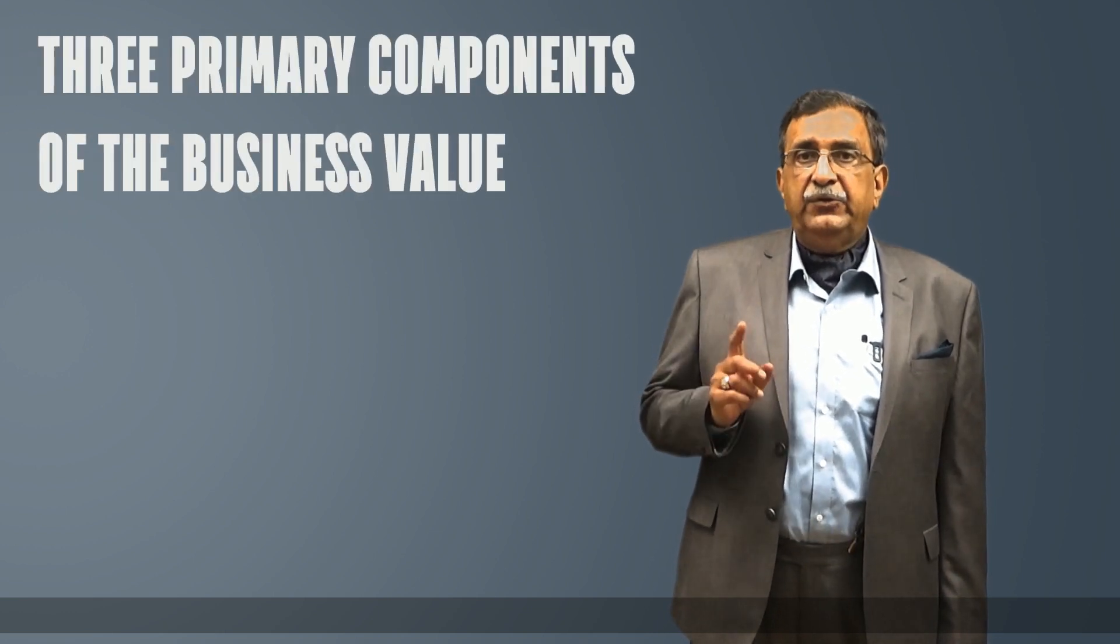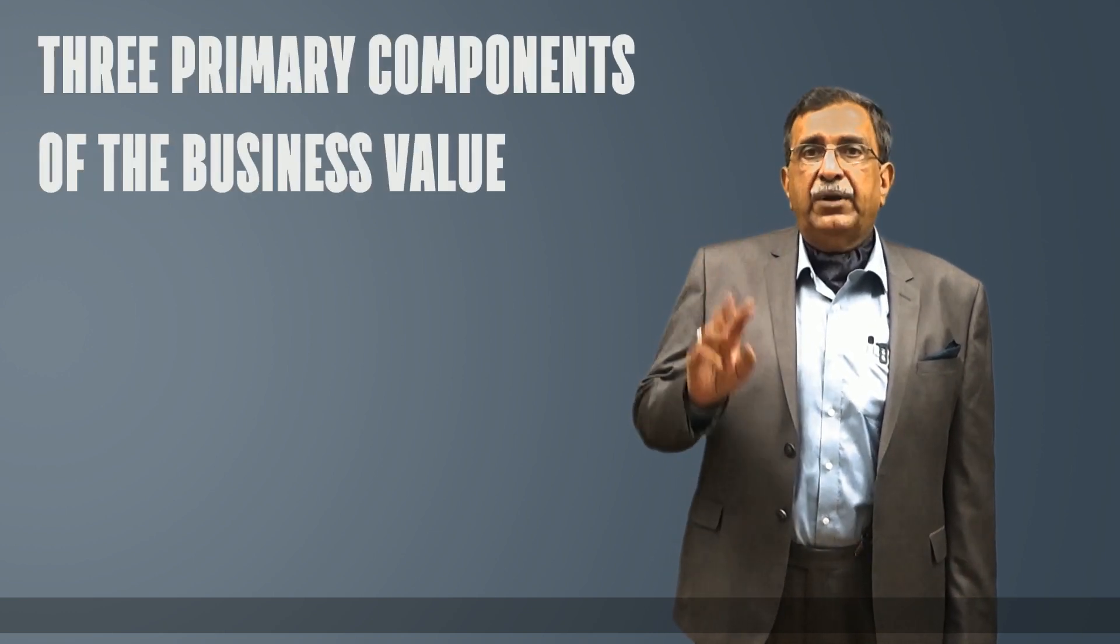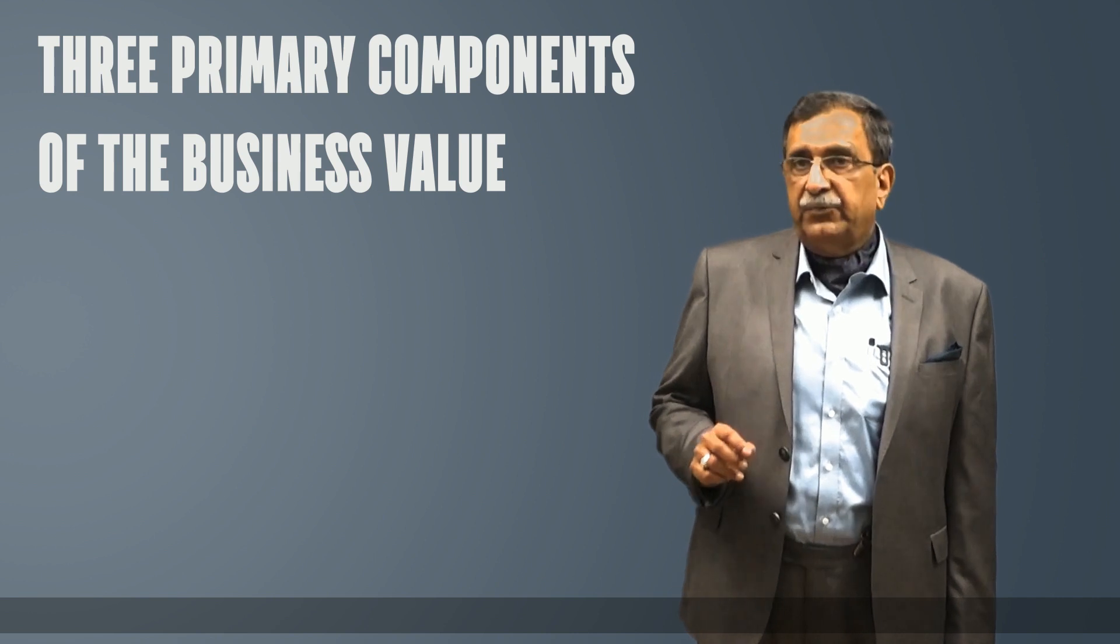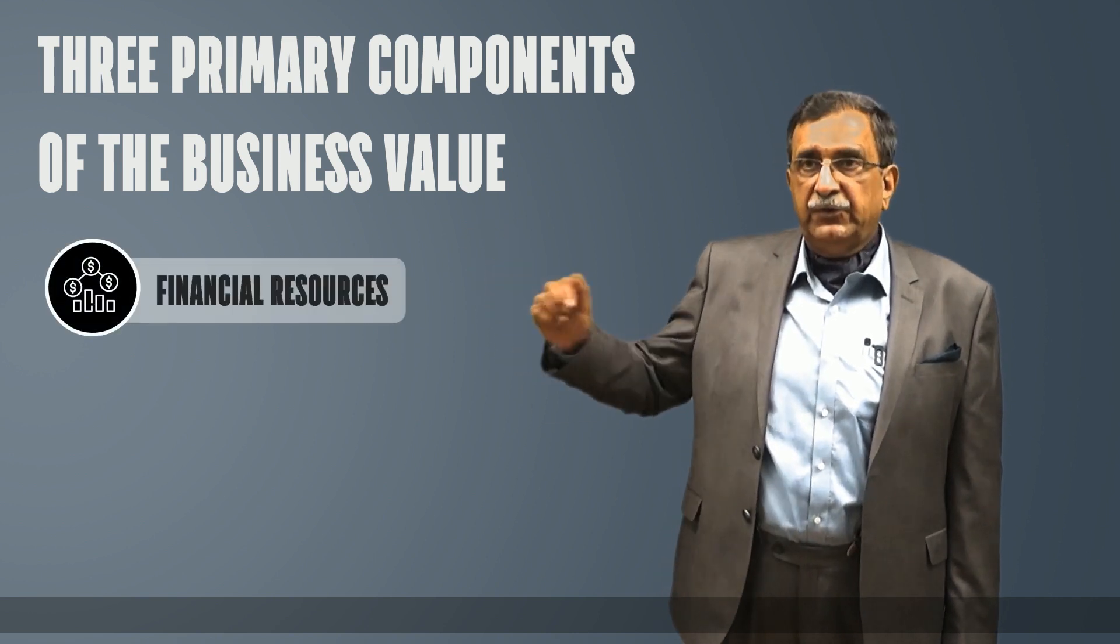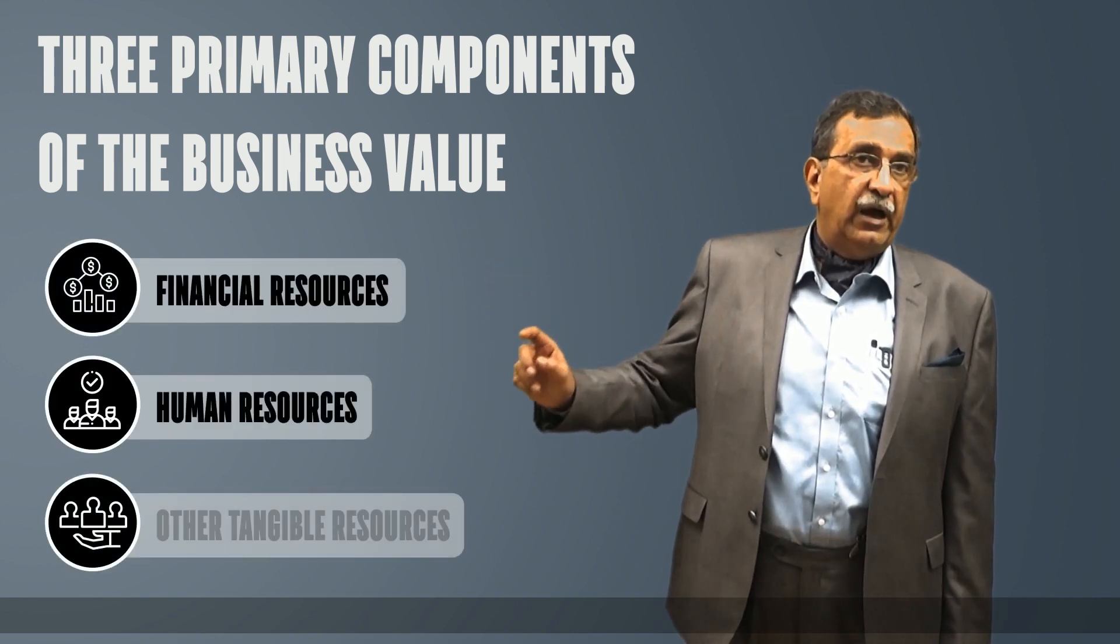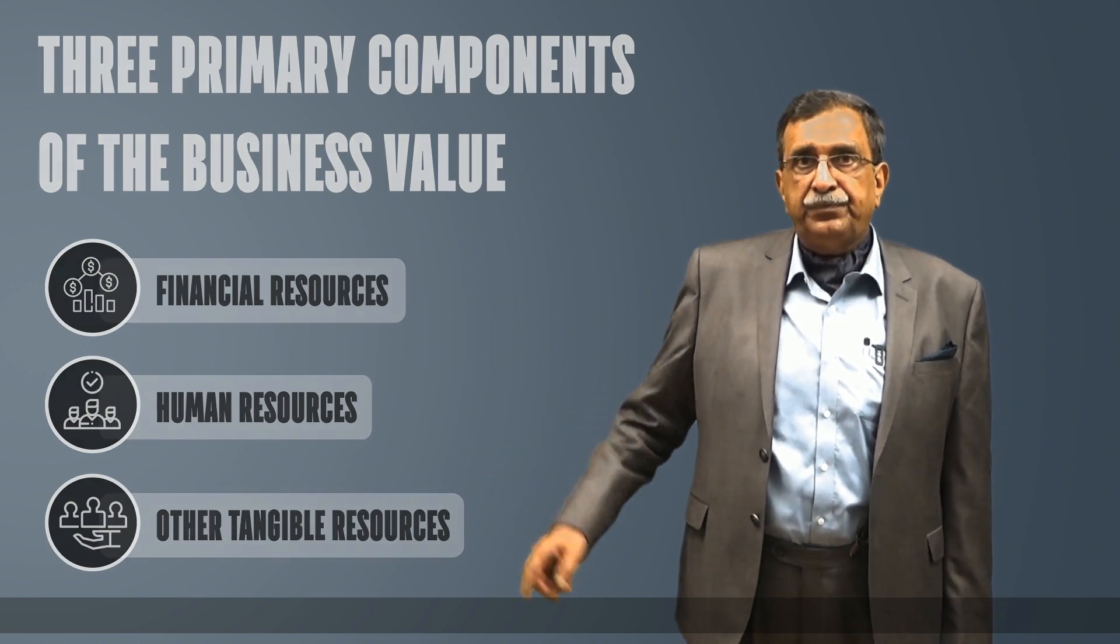Now, owners may administer the business themselves, or they may employ managers to do this for them. Whether they are owners or employees, managers administer three primary components of business value: financial resources, human resources, and other tangible resources.